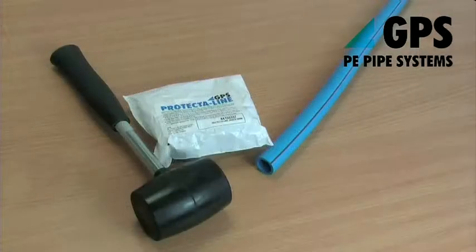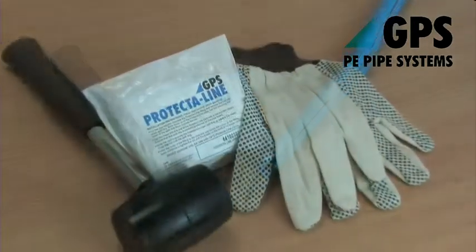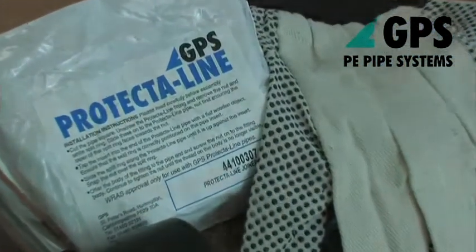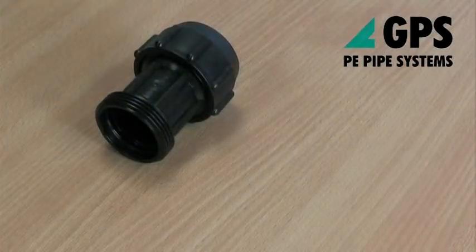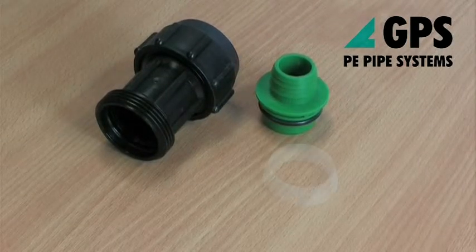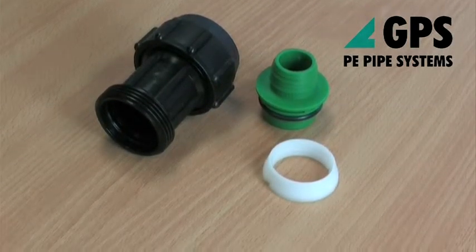Protector Line mechanical compression fittings come complete with assembly instructions included on the label. Fittings consist of a body, insert, grip ring, and nut.